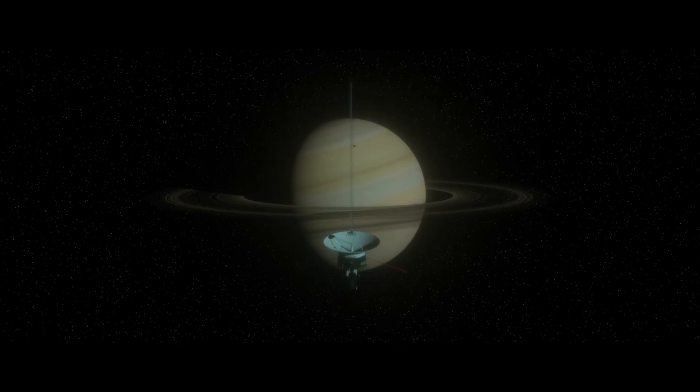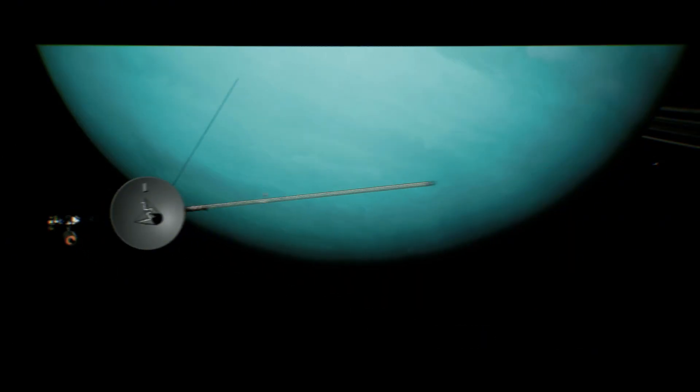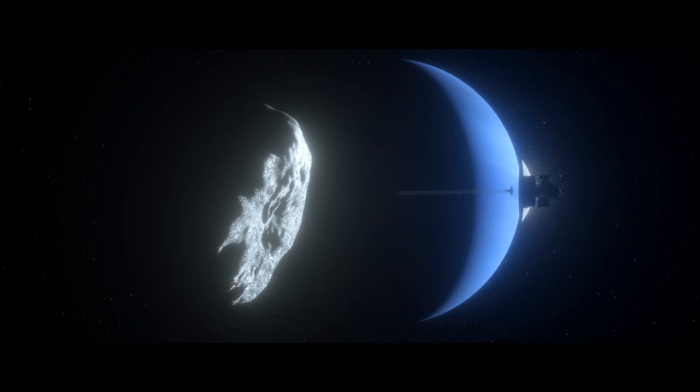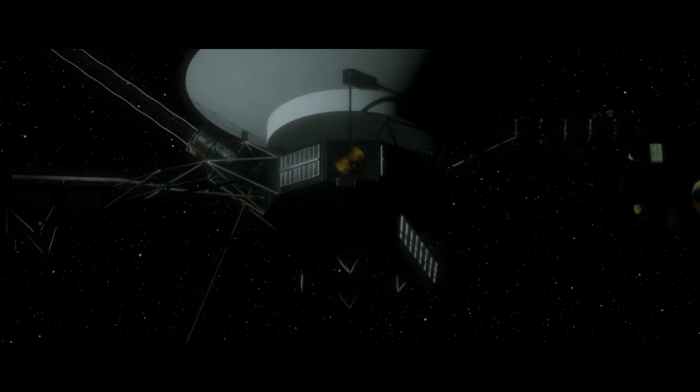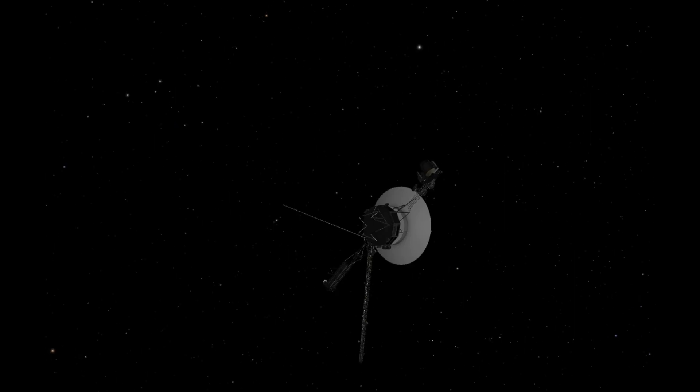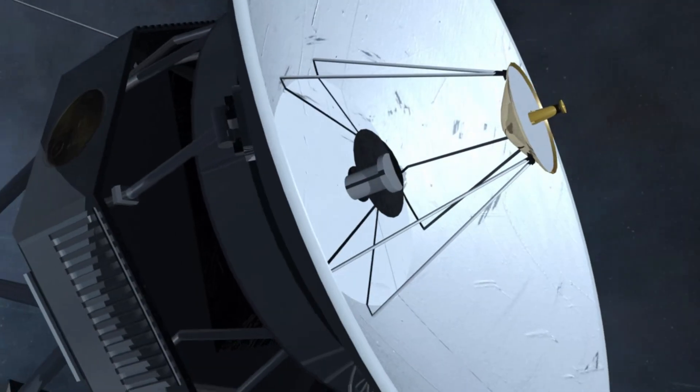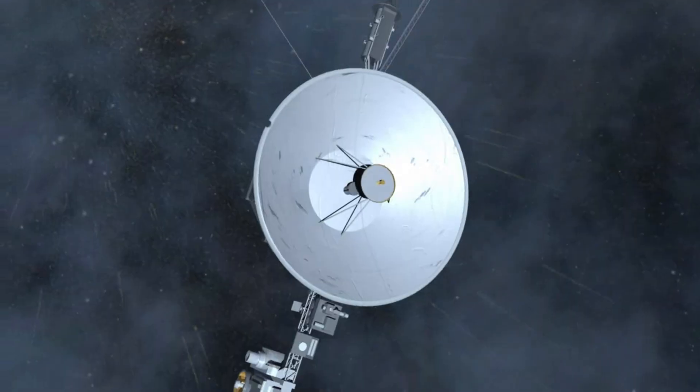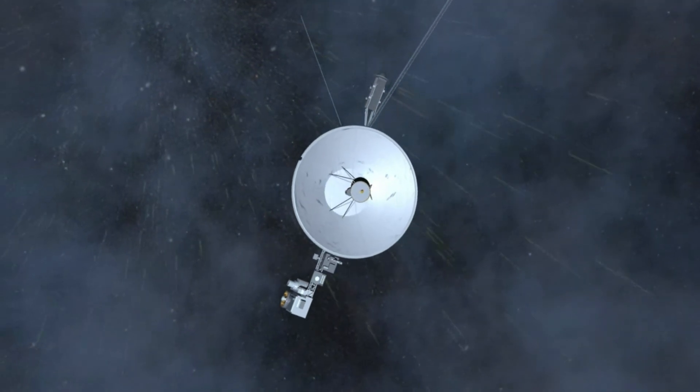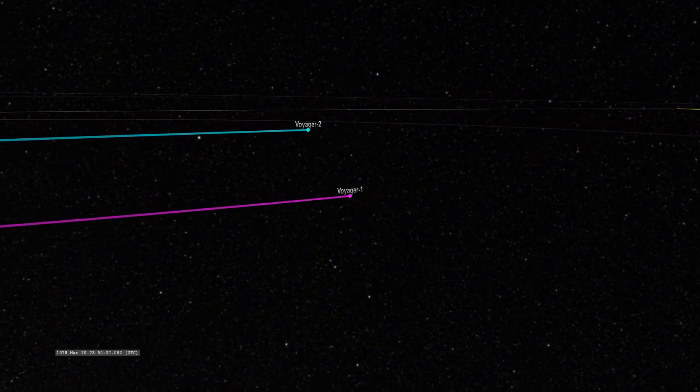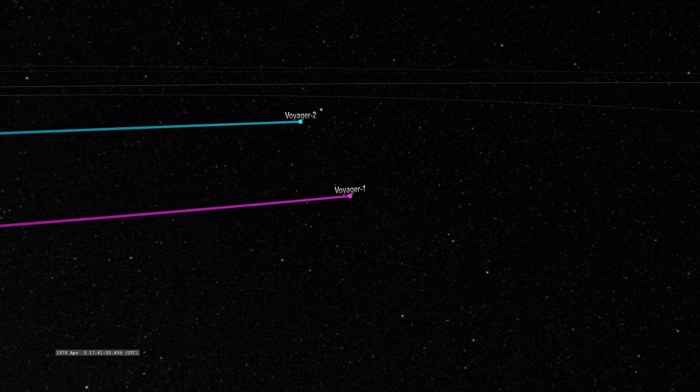Using the gravity of these planets like a giant slingshot, Voyager flung itself first toward the outer planets and then into the depths of interstellar space. With its speed of 61,000 kilometers per hour, or 17 kilometers per second, it earned the title of the fastest human-made object. An incredible speed by human standards. But next to the speed of light at 300,000 kilometers per second, it's like a snail's pace. It was this slow but steady journey that would take it where no one had gone before.